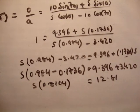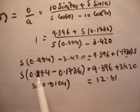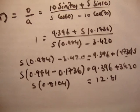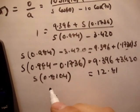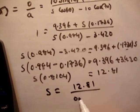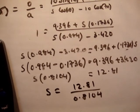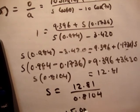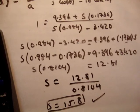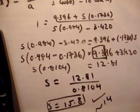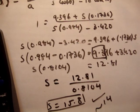Rearranging — pull everything with an s to the left and everything else to the right — we get s times 0.8104 equals 12.816, so s equals 12.81 divided by 0.8104, giving s equal to 15.8. That's what's at the back of the book, so that's correct. The point to note is that if you rounded to one decimal place too early — for example using 0.9 for sin 70 — you would have gotten approximately 14, which would seem wrong but is just an accuracy issue.